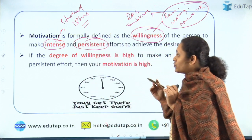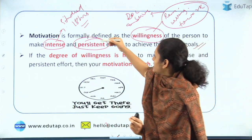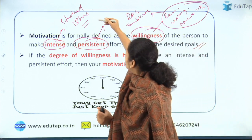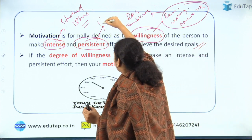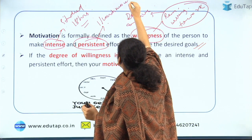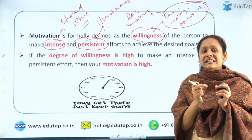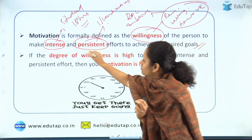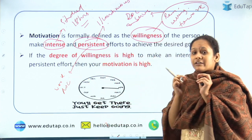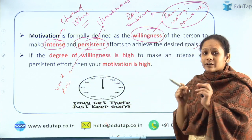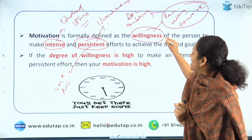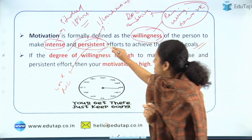The next most important concept is persistent manner. He cannot just do the actions once or twice — it has to be continuous. Ram has to maintain his action persistently; he has to work hard till he becomes a doctor. So whenever you hear motivation, three things should come to your mind: willingness, intense efforts, and persistent efforts.